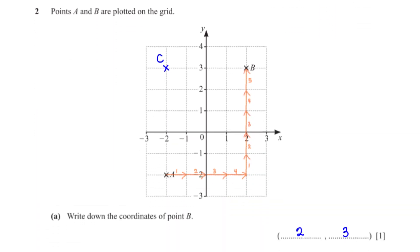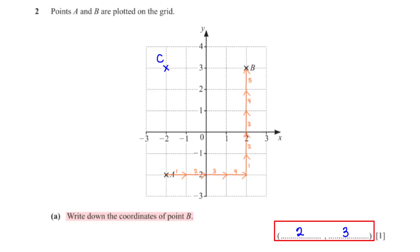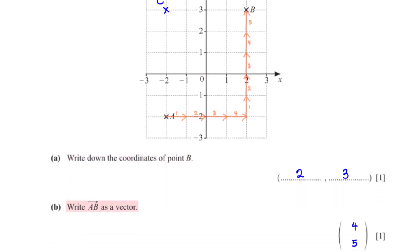Points A and B are plotted on the grid. Write down the coordinate of point B. The x-coordinate of point B is 2 and the y-coordinate of point B is 3. So we have (2, 3). Write AB as a vector. To move from point A to point B, we go 4 units to the right and 5 units upwards. And so the vector AB is (4, 5).